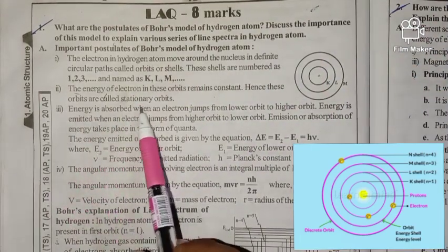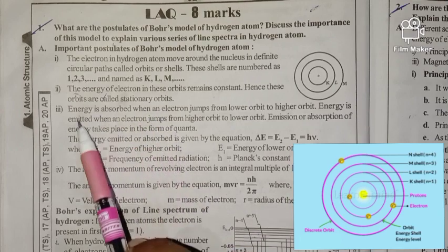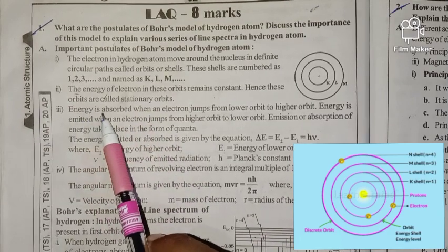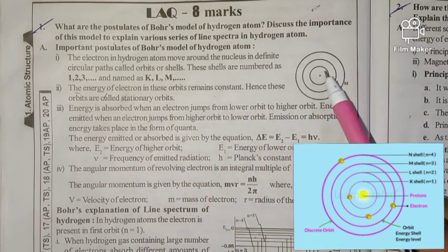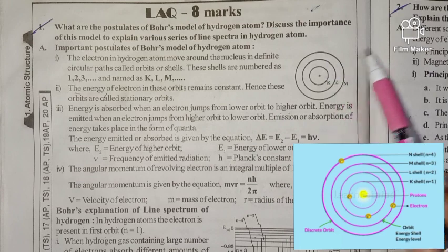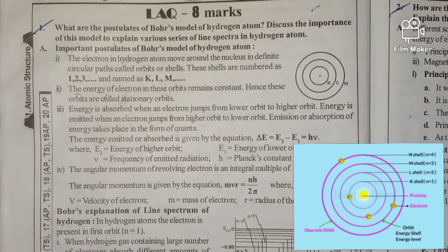Energy is absorbed when an electron jumps from a lower orbit to a higher orbit. This means there is a gain or change in energy of the electron.